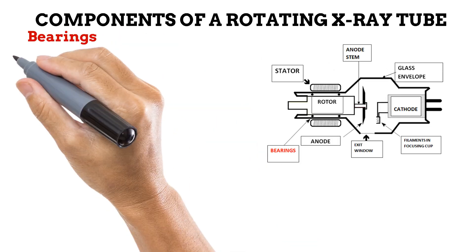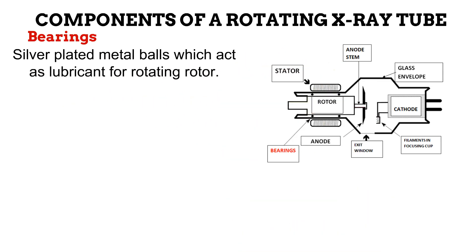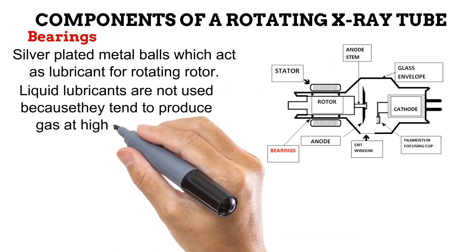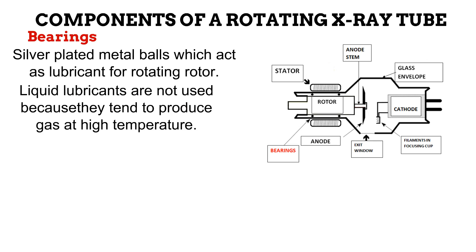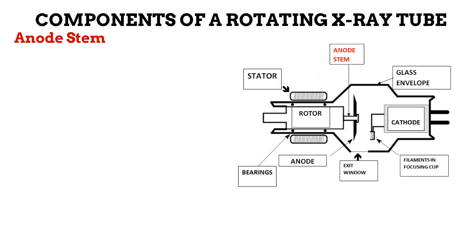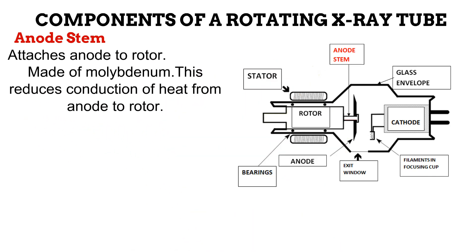Next are the bearings. These are metal balls that are covered in silver. They act as lubricant, preventing friction from affecting the rotating rotor. You might be wondering why solids are used for lubricant instead of liquids. This is because the X-ray tube operates at a very high temperature, and liquids tend to produce gas at high temperatures. When gases are present in the tube, X-ray photon production is reduced and the tube could get damaged. Next is a cylindrical structure known as the anode stem. It attaches the anode to the rotor. It has a small cross-sectional area and is made of the poor conductor molybdenum. These two properties help to reduce the amount of heat that is conducted from the anode to the rotor, because if heat gets to the rotor, it could damage the bearings. The anode stem will not allow heat to spread from the anode to the rotor due to its small cross-sectional area and the fact that it is made of a poor conductor.